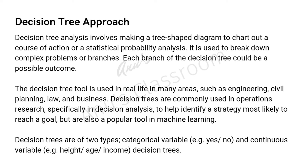Decision trees are very commonly used in operations research and specifically in decision analysis to help identify a strategy most likely to reach a goal, and are also a very popular tool in machine learning. Decision trees are of two types: first is the categorical variable type — like yes/no, or male/female — and it could also be continuous, like height, age, income, blood pressure, and such things. These are the two different types of variables in decision trees: categorical and continuous.